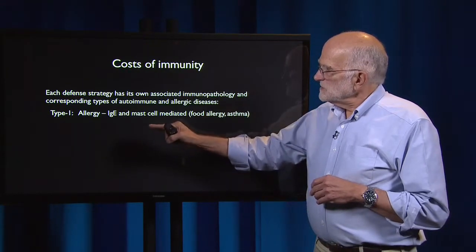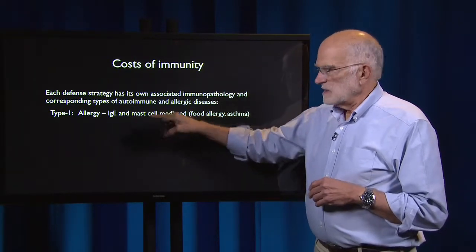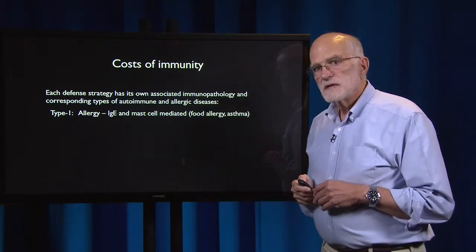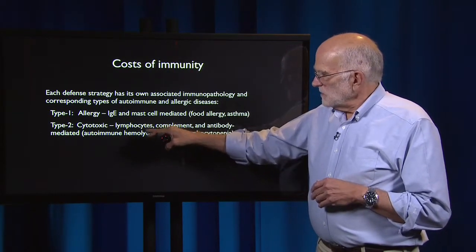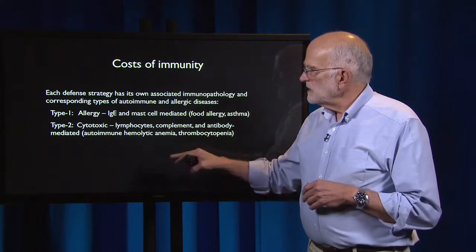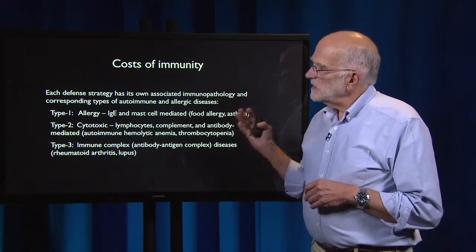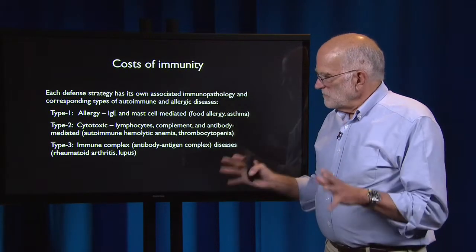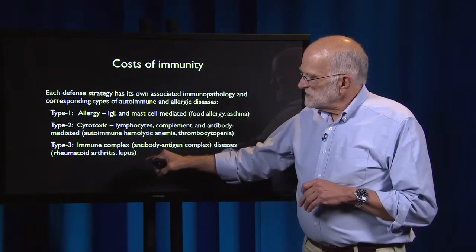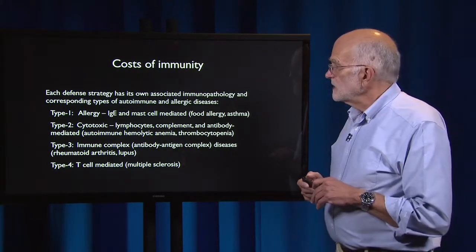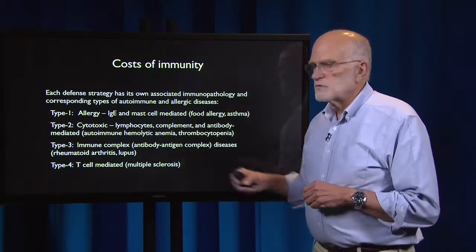Type 1 immune responses are associated with allergy — immunoglobulin E and mast cell mediated — including food allergies and asthma. Type 2 immune responses are cytotoxic, mediated by lymphocytes, complement, and antibody, and can result in autoimmune hemolytic anemia and thrombocytopenia. Type 3 immune responses are mediated by the immune complex — the antibody-antigen complex — and result in diseases like rheumatoid arthritis and lupus. Type 4 immune responses are T cell mediated, and their associated cost is multiple sclerosis.